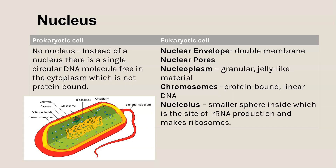Comparing the nucleus: eukaryotic cells have a nucleus with a nuclear envelope containing pores, a granular jelly-like material in the middle called the nucleoplasm, and linear chromosomes with histone proteins bound to them. There's also a nucleolus inside, which is where rRNA is produced and ribosomes are assembled.